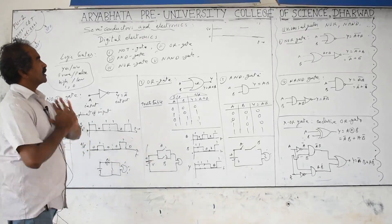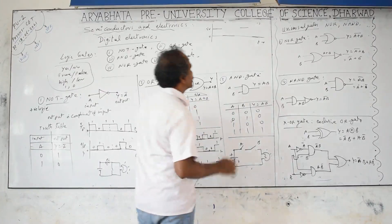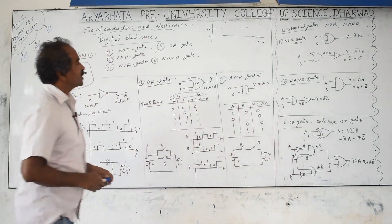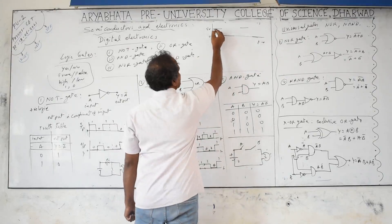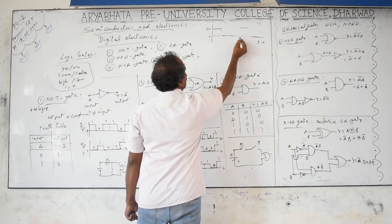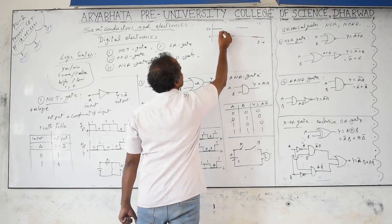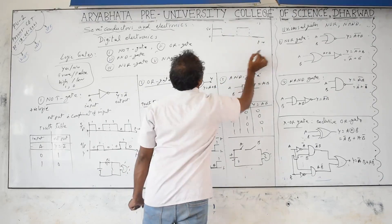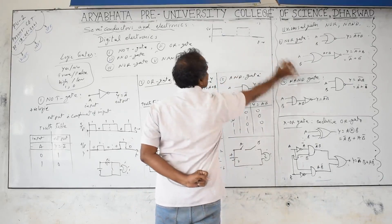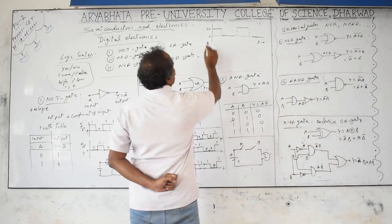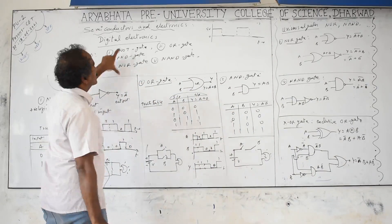Next we discuss digital electronics. 'Digital' here means only two voltage levels: high voltage (representing 1) or zero voltage (representing 0). The voltage changes with time as constant-then-zero pulses, which we represent as square waves for clarity. High voltage is typically 5 volts, used in computers and calculators. This is called positive logic: 5 volts = 1, zero volts = 0.